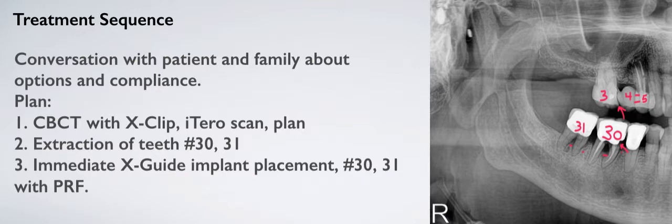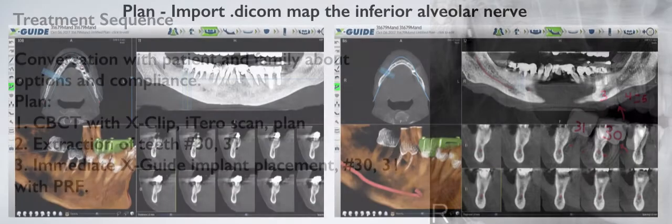So the plan was to take a CBCT with an X-Clip, take an intraoral scan using an iTero scanner, plan the case, and then execute all on the same day. That included extractions of teeth 30 and 31, and immediate implant placement using the X-Guide and PRF with bone grafting.